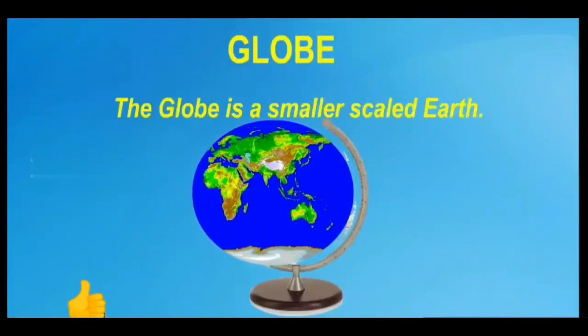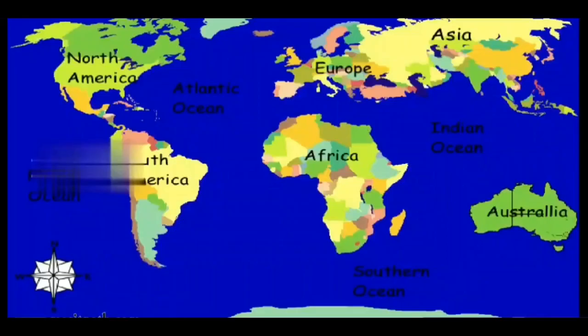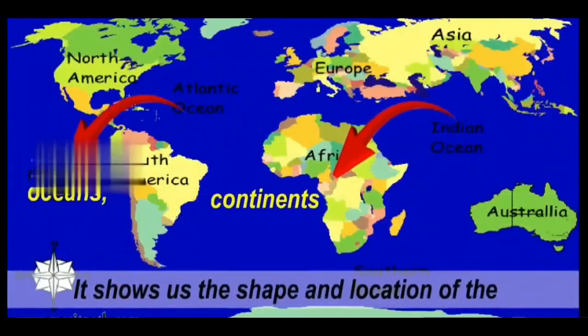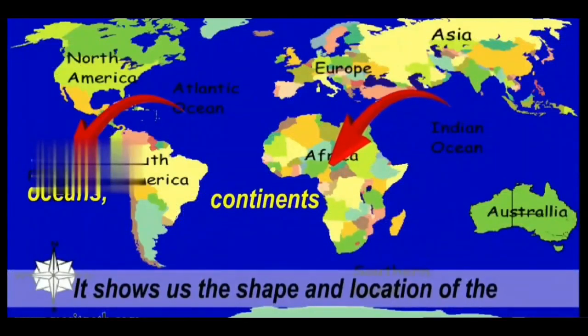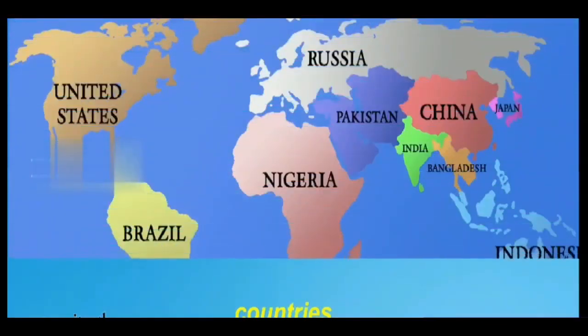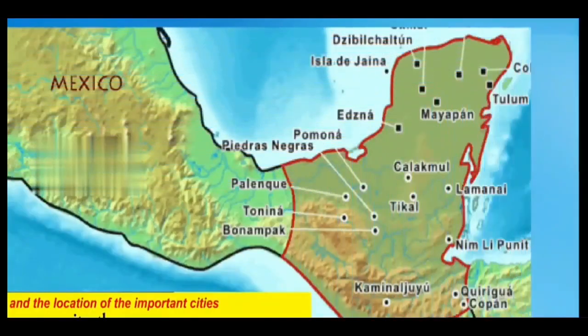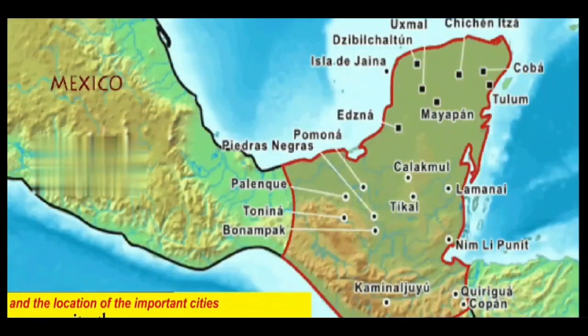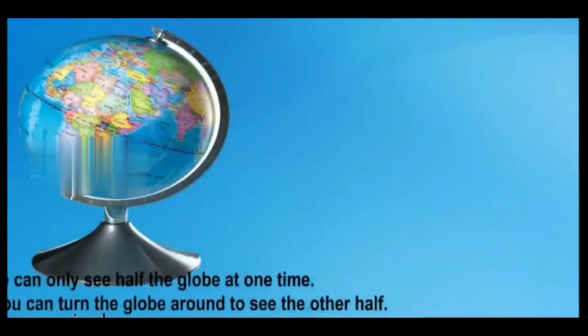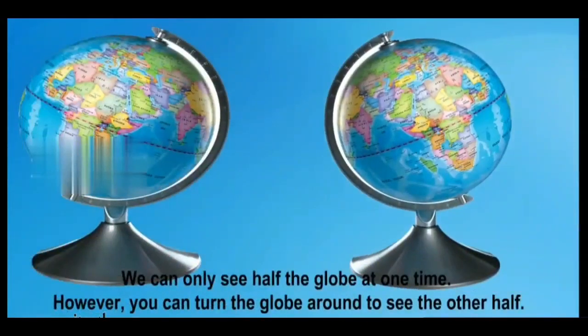The globe is a smaller scaled earth. It shows us the shapes and locations of the continents, oceans and the countries and the locations of the important cities as well. We can only see half the globe at one time. However, you can turn the globe around to see the other half.